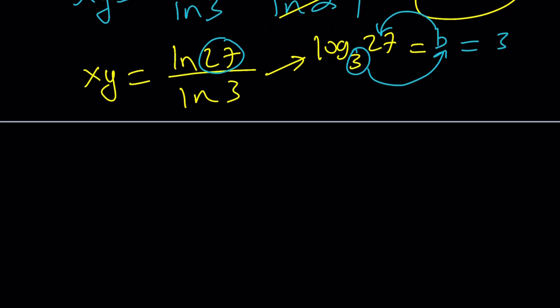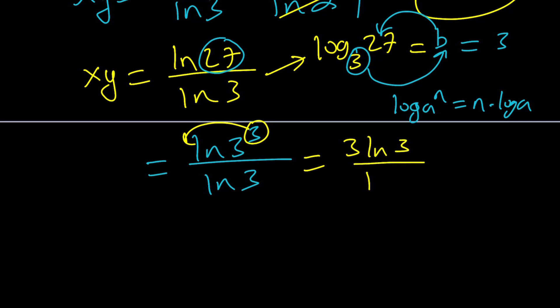But you could also do it this way, 27 is 3 cubed, so you could write it as ln 3 cubed over ln 3. And then using the power property of log A to the N equals N times log A, you can basically, and we've been using it, right, bring this to the front, you get 3 ln 3 divided by ln 3.